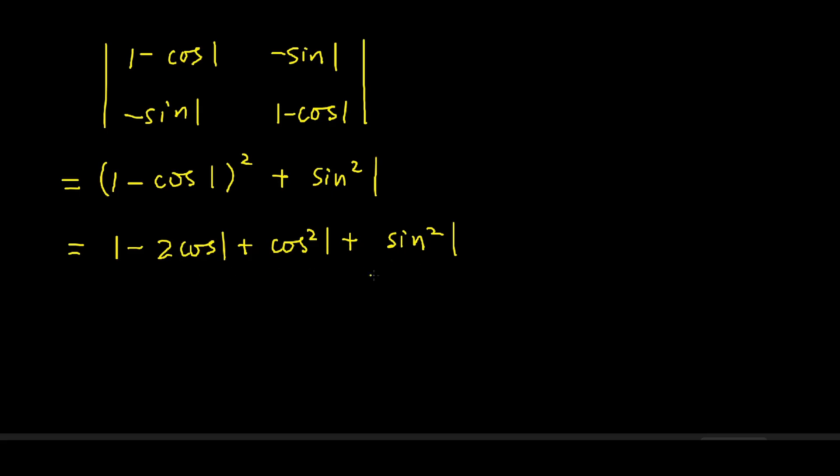And since cosine squared plus sine squared is always 1, we get 2 minus 2 cosine of 1. This is of course non-zero, because otherwise it would mean cosine of 1 is 1. Therefore, L equals M equals 0.